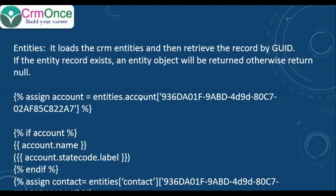Similarly, we can do this directly with entities dot your entity schema name. Another way is using square bracket notation: entities square bracket, passing the entity schema logical name and the GUID of the record you want to retrieve — and that retrieves the particular entity record in the web template code.